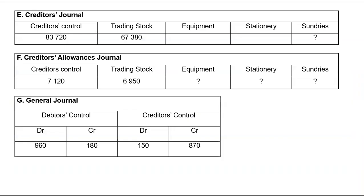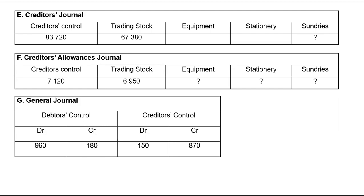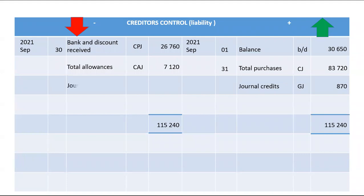All returns we make to creditors will be found under creditors allowances — these are your total allowances or total returns to creditors. That will reduce what we owe and is placed on the debit side, because when a liability decreases it decreases on the debit side. The amount is 7,120. The only thing left is general debits, found in the general journal under creditors control — the total of the debit side is 150, and that also reduces creditors control on the debit side.